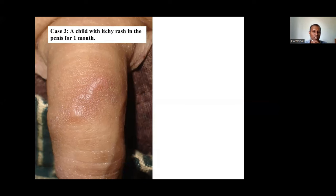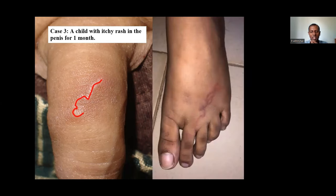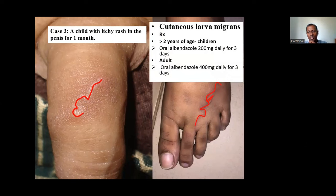For cutaneous larva migrans: above two years of age, albendazole 200mg for three days; adults 400mg daily for three days; below two years, better to apply albendazole cream. The curvy linear nature of the rash can occur anywhere. An interesting case: a man doing construction work carrying sand bags on his shoulders developed cutaneous larva migrans on the shoulder. People who lie down on the beach without a shirt develop multiple larva migrans.